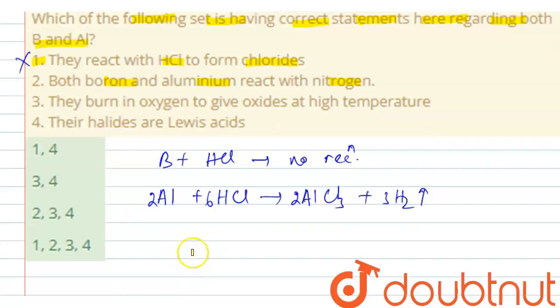So boron reacts with nitrogen to form boron nitride, and aluminium also reacts with nitrogen to form aluminium nitride. Therefore, the second one is also right.